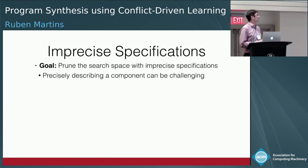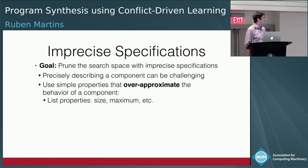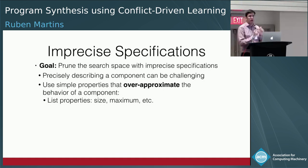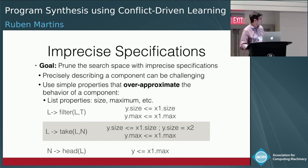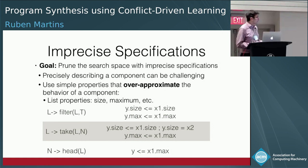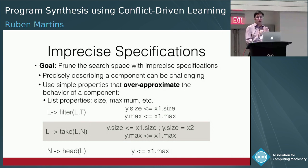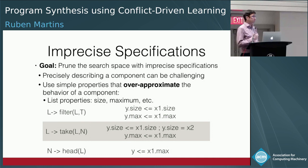The answer is yes — we can check for conflicts. Sometimes it's very hard to precisely capture what a component must do, but we can use simple properties that over-approximate the behavior. For list properties, we can say: after applying filter, the output size is equal to or smaller than the input, and the maximum is equal to or smaller. Similarly for take: the size and maximum of the output is less than or equal to the input. You can do this reasoning for all components in your DSL.